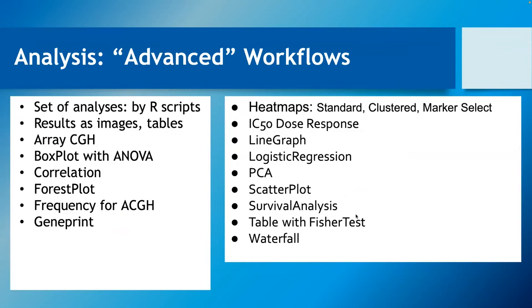These are the advanced workflows — each runs an R script. You get results as images you can download, and as tables you can save data from. There are various array hybridization methods added by the TRAIT project. There are series of plots: box plots, correlation plots, heat maps, clustered heat maps, marker selection, principal component analysis, scatter plots, and more can be added. We'd like to add more workflows and see what might be useful.